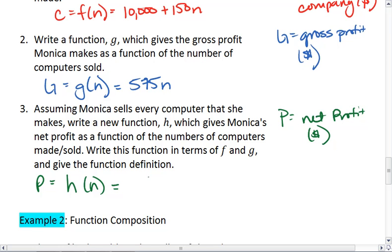Okay. When we know to find profit, we'll take the gross profit, g of n, minus, or capital G, minus the cost c, which is function g, minus function f.